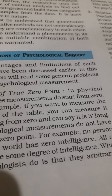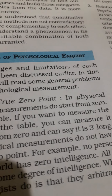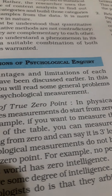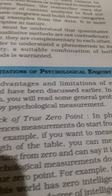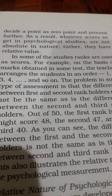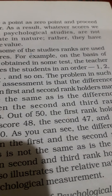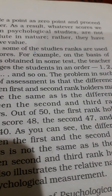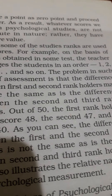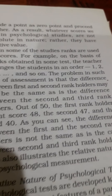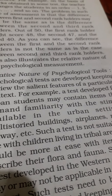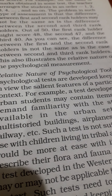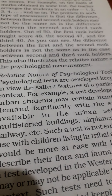For example, when psychologists try to assess the intelligence level of an individual, it cannot start from the base point zero, as everyone in this world has some degree of intelligence. Thus the psychologists decide any point of intelligence of an individual as zero and move further. So the measurements are not absolute; rather they are relative in nature.